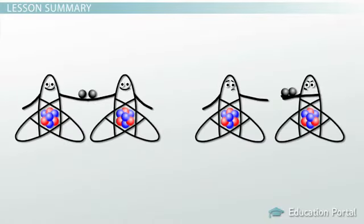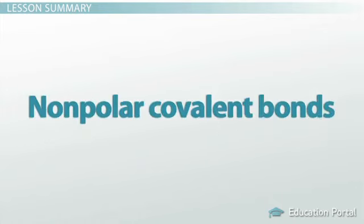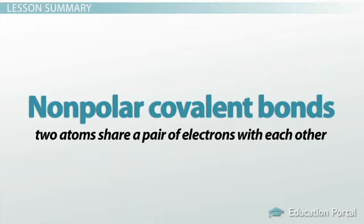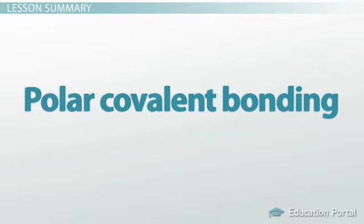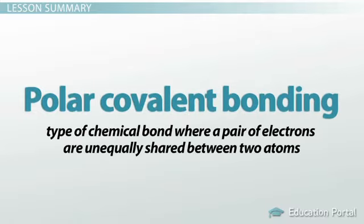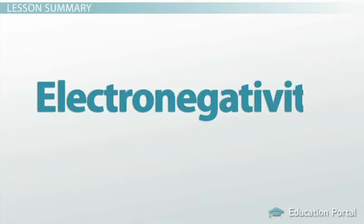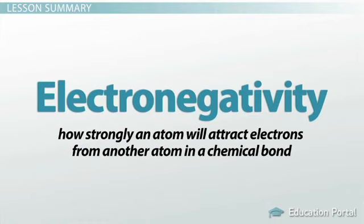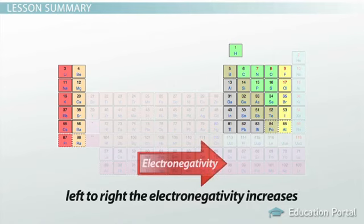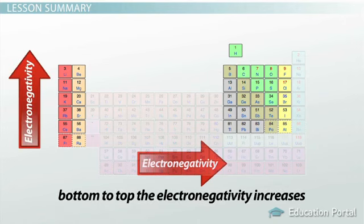In this lesson you learned about two types of bonds: nonpolar covalent and polar covalent. Nonpolar covalent bonds are a type of chemical bond where two atoms equally share a pair of electrons. Polar covalent bonding is where a pair of electrons are unequally shared between two atoms. You also learned how to use the electronegativity trends of the periodic table to predict bond type. Electronegativity is how strongly an atom attracts electrons from another atom. As you move left to right on the periodic table, electronegativity increases, and as you move from bottom to top, it also increases.